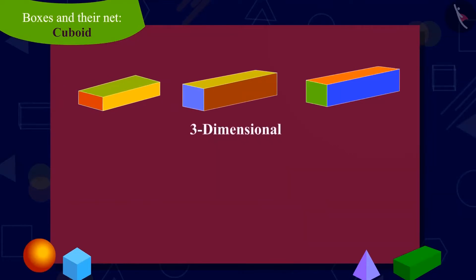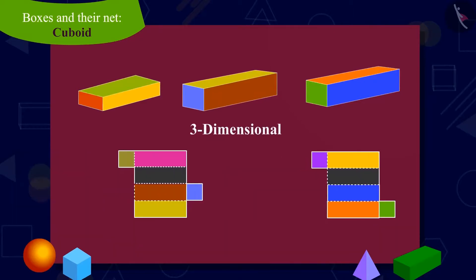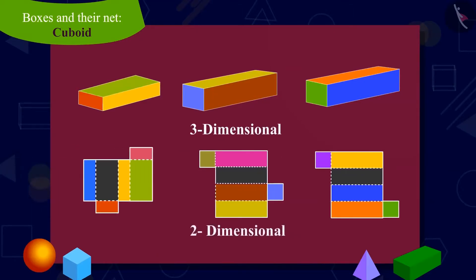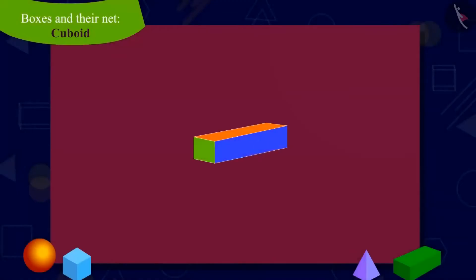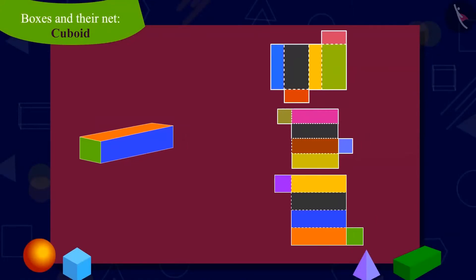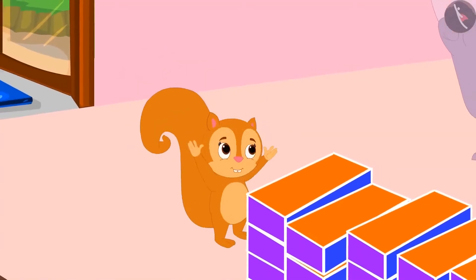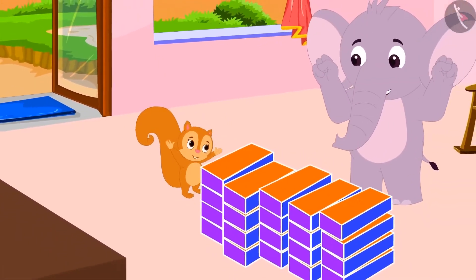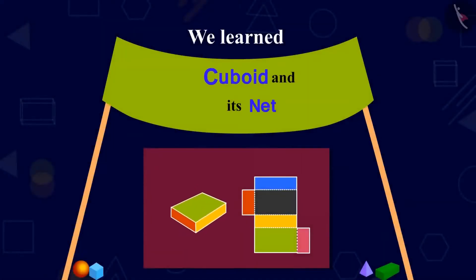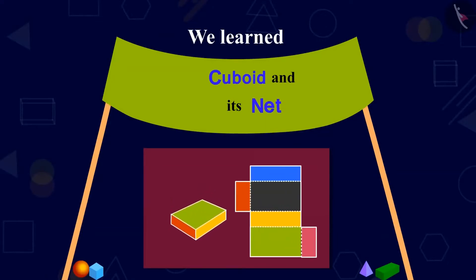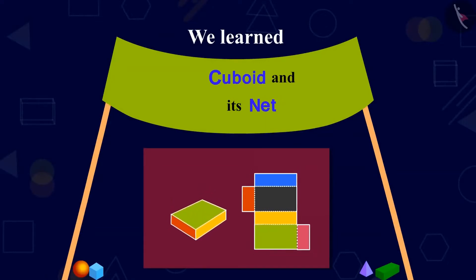Yes, children, many two-dimensional nets of any three-dimensional shape, such as cuboids, can be made. We can make any box by folding various types of nets. Chanda was happy to learn about the cuboid shaped net, and Chanda and Appu packed all the sweets. In this lesson, children, we learned about the cuboid and its net. In the next video, we will learn about the cube and its net.